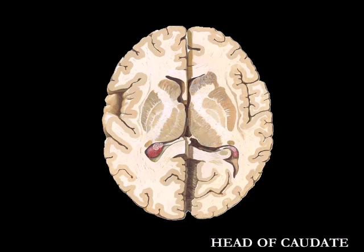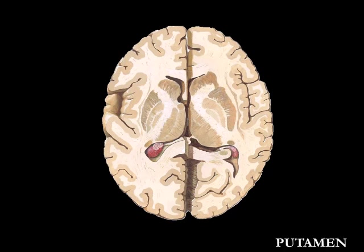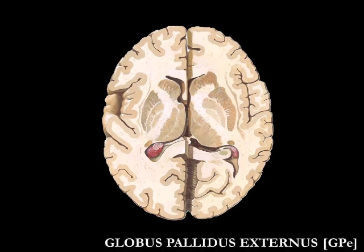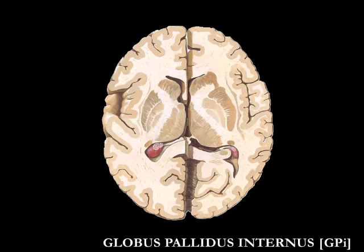The thalami are paired structures situated along the banks of the third ventricle. The caudate is an elongated mass of gray matter closely related to the lateral ventricle. Around the rostral border of the internal capsule, it is fused with the putamen of the lentiform nucleus, while its tail terminates in close relationship to the amygdala. Here you can see the location of the putamen and globus pallidus internus and externus.